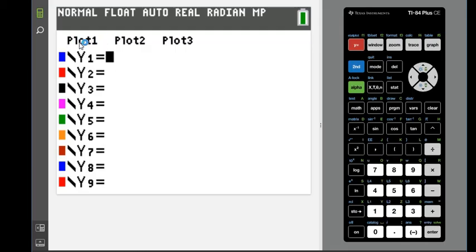Or you may have your stat plots turned on because you're doing something in a stats class. So if any of these plots are highlighted, you may want to turn them off. I basically just hit enter while I'm highlighted on there. So make sure that none of those are turned on.